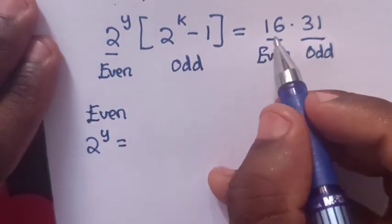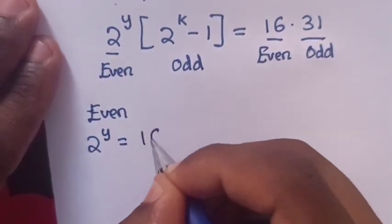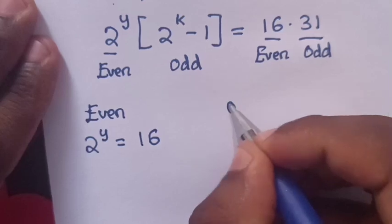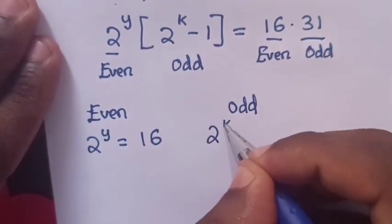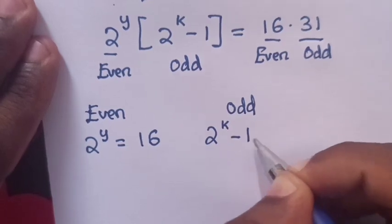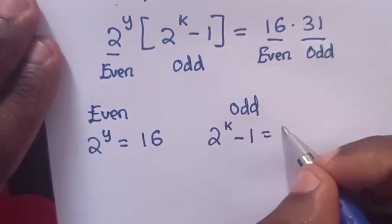Let's start with even: 2 power y equals 16. And the odd: 2 power k minus 1 equals 31.